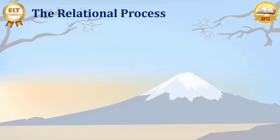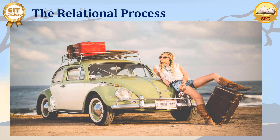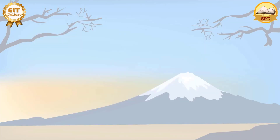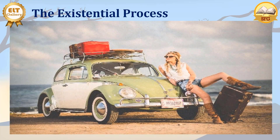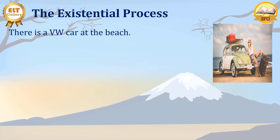Now let's start with the relational process. We have a good picture here — the picture of a girl on her car. Please have a look at the girl; she is really beautiful. Now let's see what the girl can do for us. Here we have the existential process. We have the girl here, we have the car. There is a Volkswagen car at the beach. So we say something exists there.